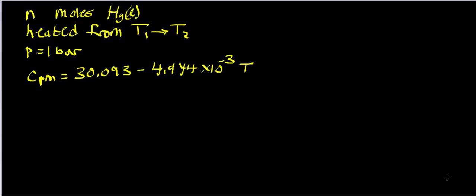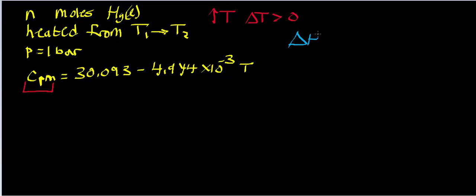Welcome back to the second law of thermodynamics, where we're studying entropy. In this video, we have n moles of a sample of liquid mercury, and we're going to heat it from some initial temperature to some final temperature, meaning that delta T is greater than zero. We're doing it at a constant pressure of one bar, and since we're at constant pressure, they give us a molar heat capacity. We're asked to find two things: delta H and the change in entropy.